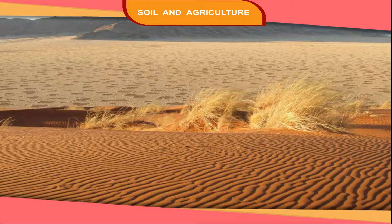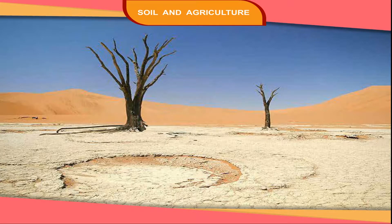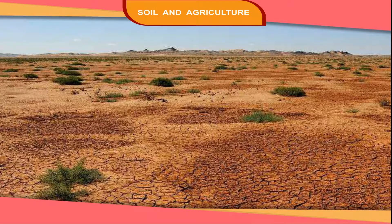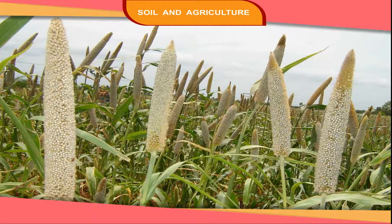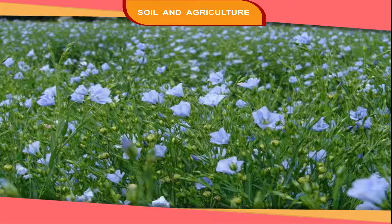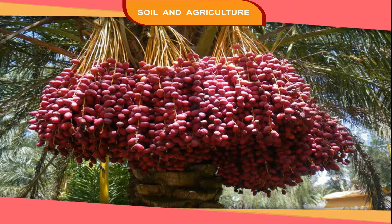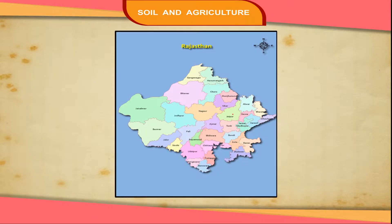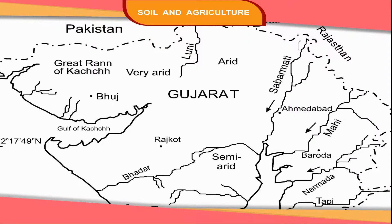Desert soil is found in the desert areas. It is also called sandy soil. Water easily seeps through it. This soil is not fertile, but it becomes fertile if it gets water and manure. It is suitable for crops like millets, gram, pulses, peanuts, linseed, cotton and dates. It is found in Rajasthan and some parts of Gujarat.